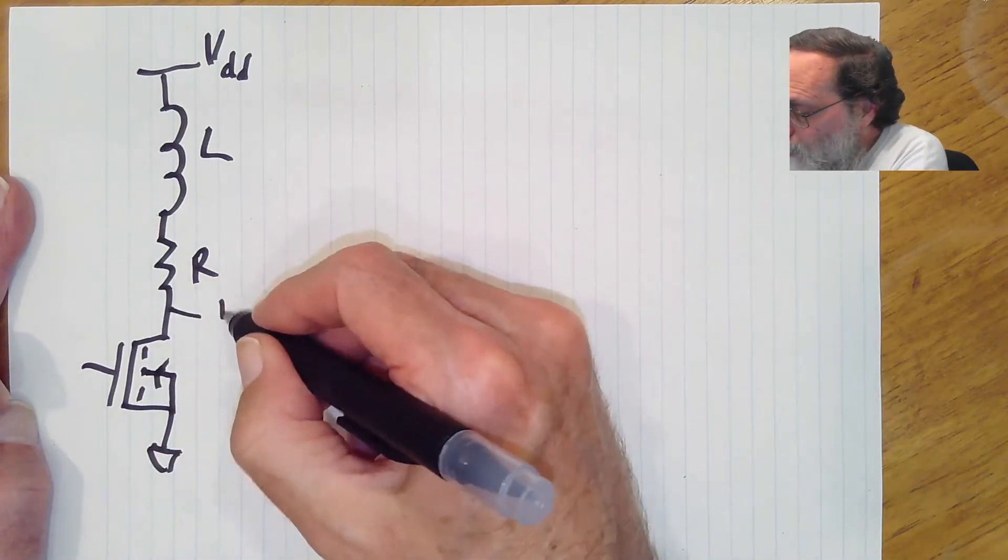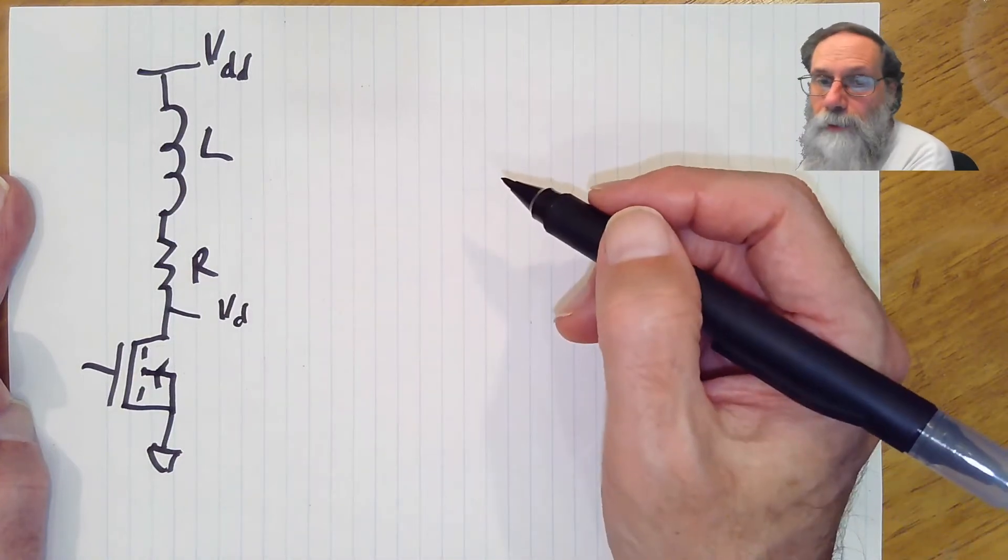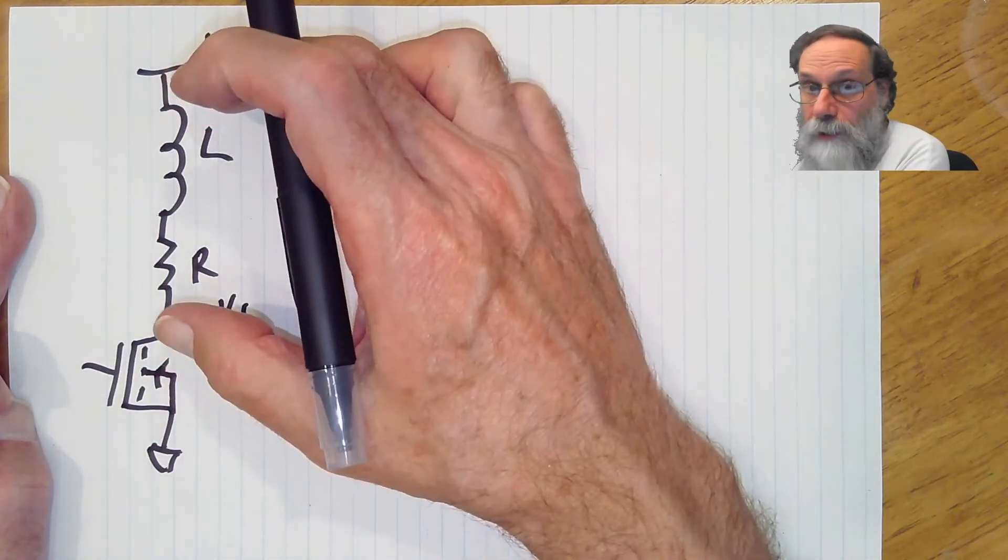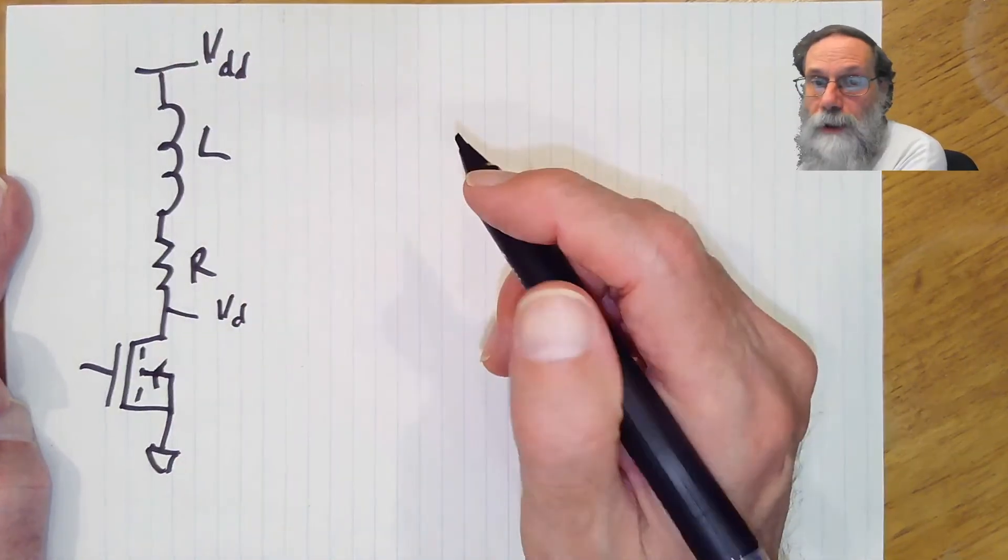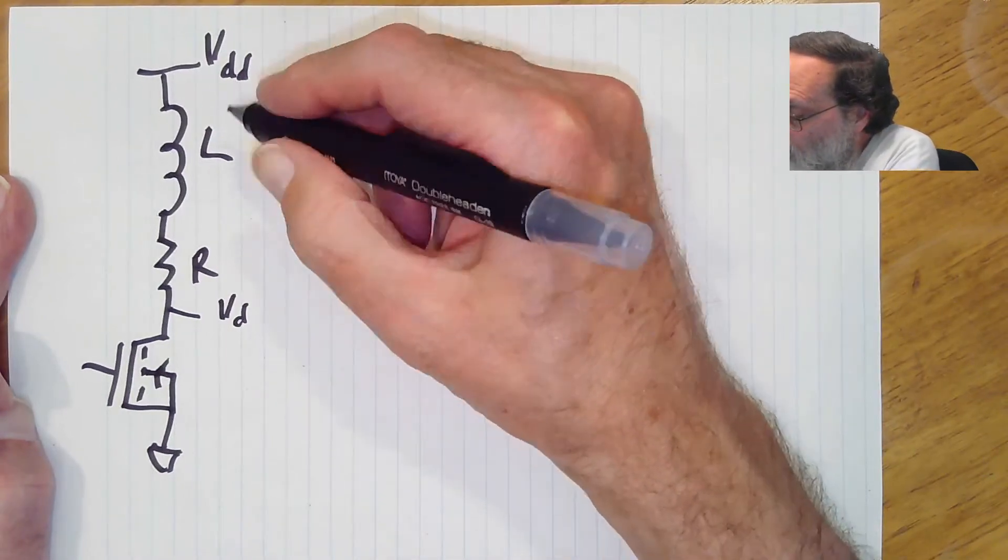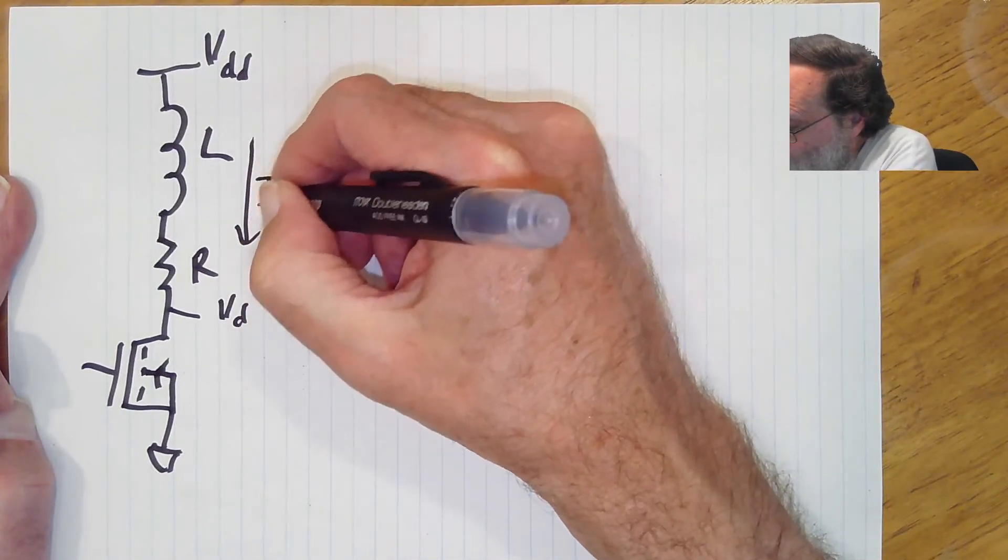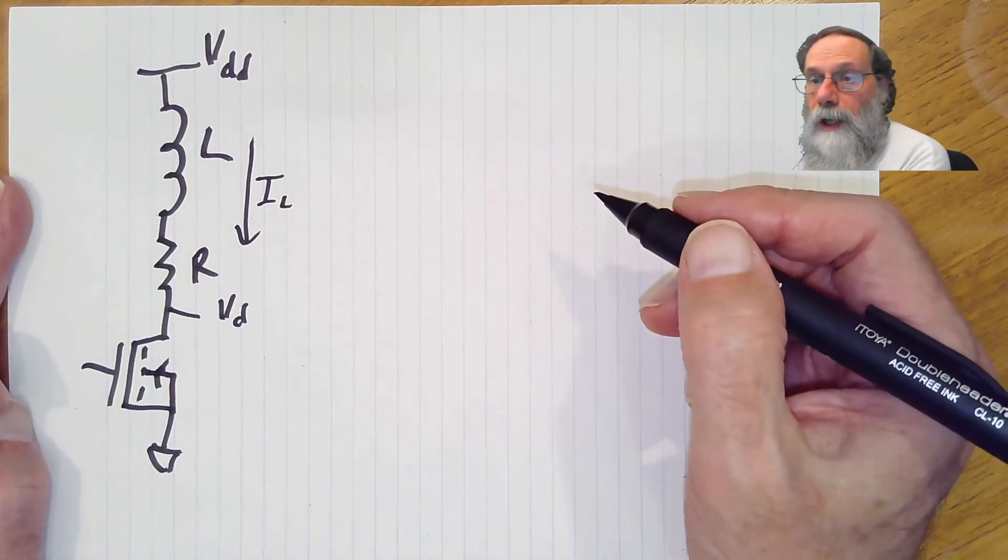And we're going to be interested in looking at the voltage here across our entire load. So VDD minus VD is going to be our voltage, and we will have a current through the inductor that we're interested in looking at.